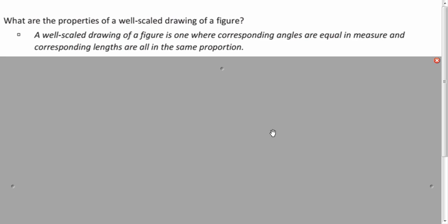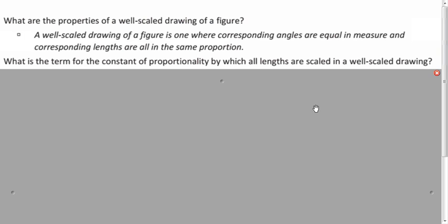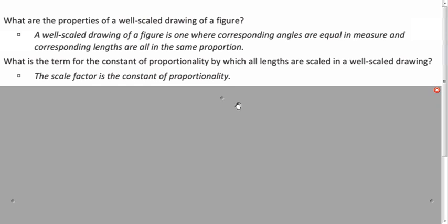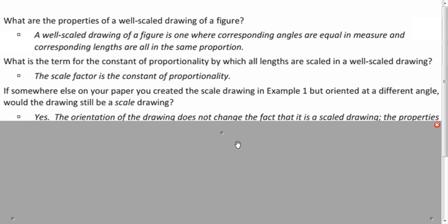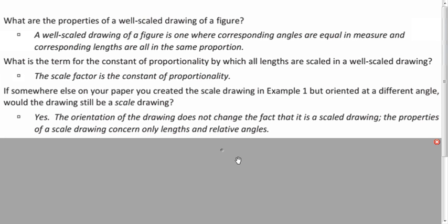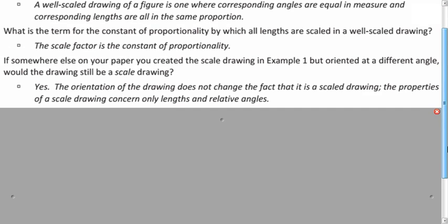So the properties we have are the corresponding angles are equal in measure. And the corresponding lengths are all in the same proportion. So since we doubled use scale factor of two, all of this proportion should be equal to two. And so that constant that you get, that's always going to be your scale factor. And if we had used a different angle to make our scale drawing, would it still be a proper scale drawing? Yeah, it doesn't matter where you do your scale drawing. All you have to talk about is the lengths and the angles. So you can do a scale drawing wherever you want on the plane.